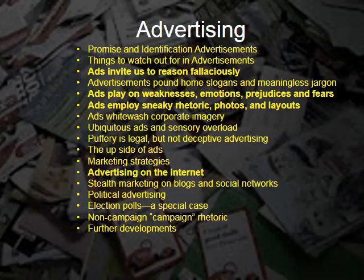The chapter of this book has the following sections: promise and identification advertisements, things to watch out for in advertisements, ads invite us to reason fallaciously, advertisements pound home slogans and meaningless jargon, ads play on weaknesses, emotions, prejudices, and fears, ads employ sneaky rhetoric, photos, and layouts, ads whitewash corporate imagery, ubiquitous ads and sensory overload, puffery is legal but not deceptive advertising, the upside of ads, marketing strategies, advertising on the internet, stealth marketing on blogs and social networks, political advertising, election polls — a special case, non-campaign campaign rhetoric, and further developments.